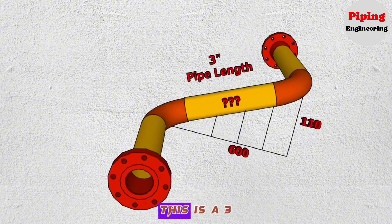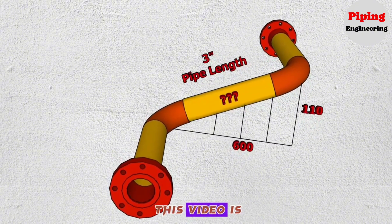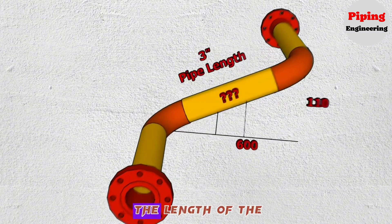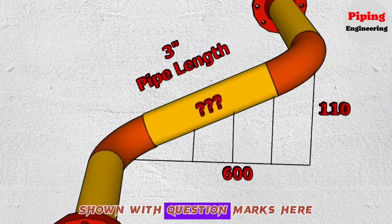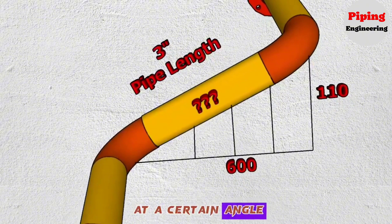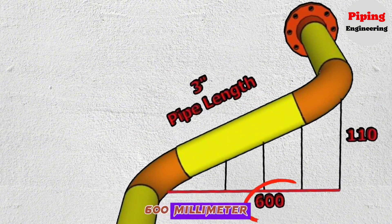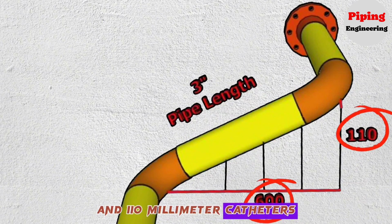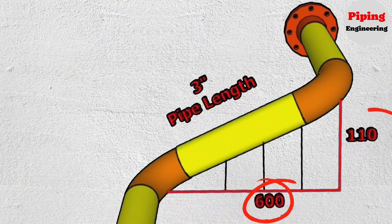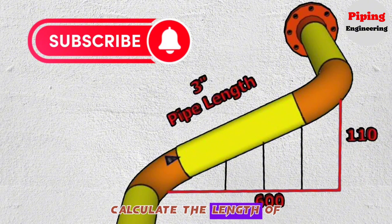As you can see this is a 3 inch pipe. The main question in this video is, we need to calculate the length of the yellow pipe shown with question marks here. This pipeline is rotated at a certain angle. As a result of this rotation, 600 mm and 110 mm catheti were created here. Let's see how to calculate the length of this piece of pipe.